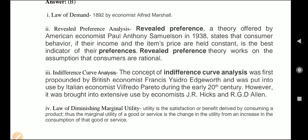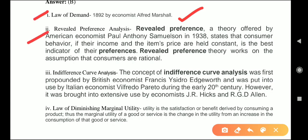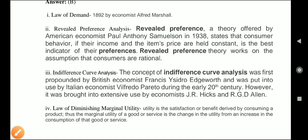The law of demand was given in 1892 by Alfred Marshall. The revealed preference theory was offered by American economist Paul A. Samuelson in 1938. It states that consumer behavior — if their income and item prices are held constant — is the best indicator of their preference.